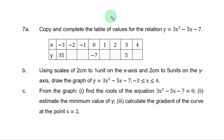Question 7a. Copy and complete the table of values for the relation y equal to 3s squared minus 5s minus 7. You have the table of values with some missing y values and you are expected to get them.